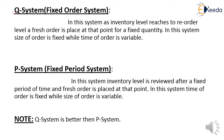What is a Q system, or fixed order system? In the Q system, if the inventory level reaches the reorder level, the organization places a fresh order at that point. The quantity of the order is fixed in the Q system — the size of the order is fixed while the time of order is variable.